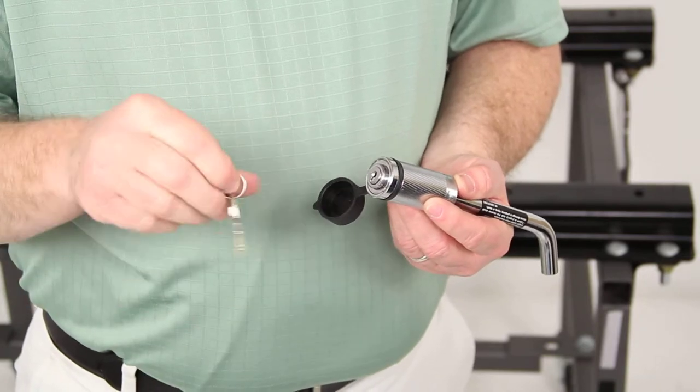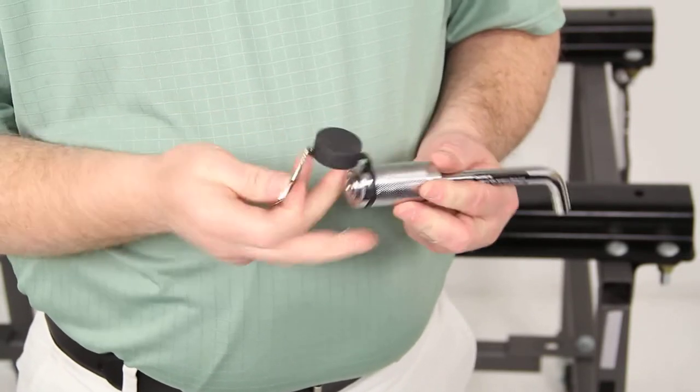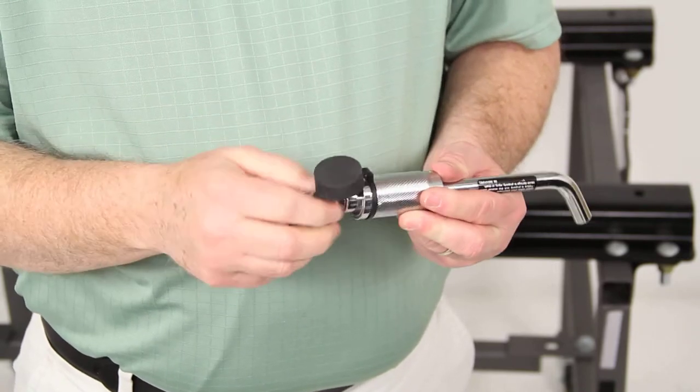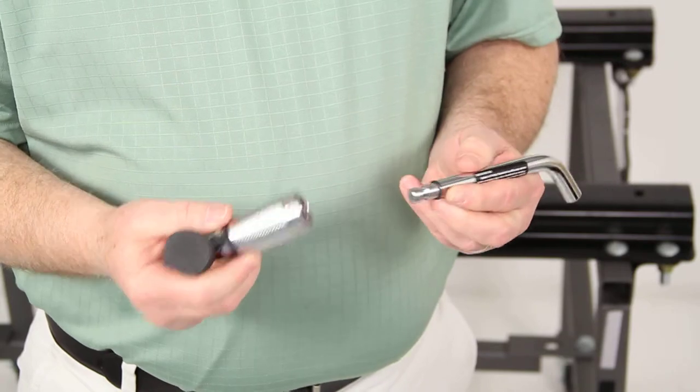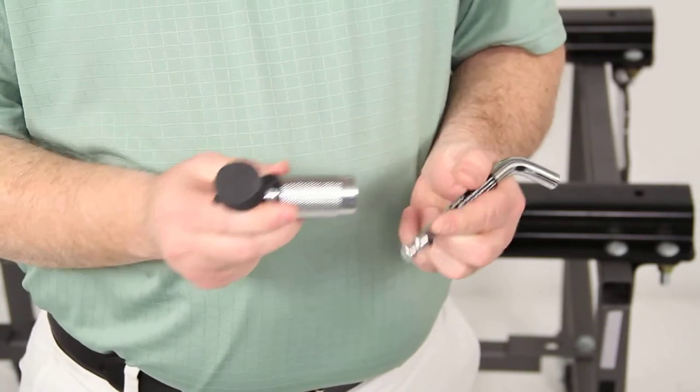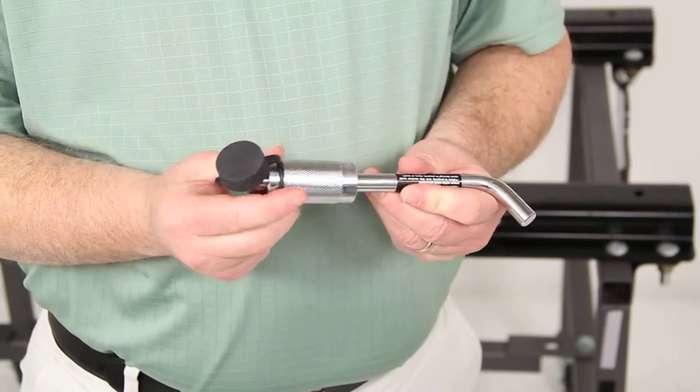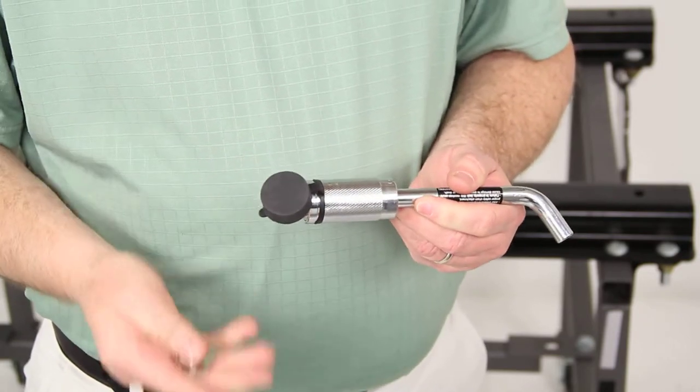It comes with two keys included. To unlock, put the key in and turn it, and the lock end will pop out. You can then remove the lock end from the pin and take the key out. When you go to install it, you can just push it on, and when you push that down it locks into place. You don't need the key to lock it down.